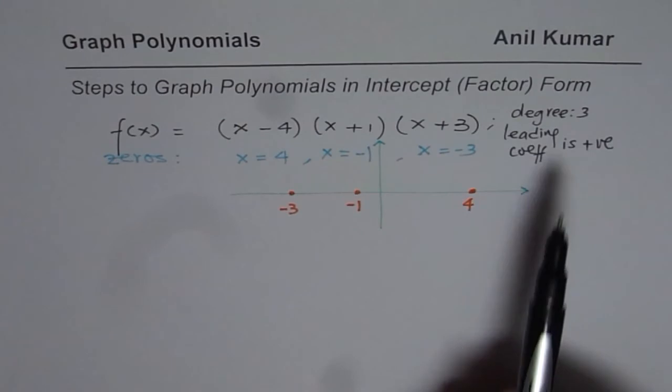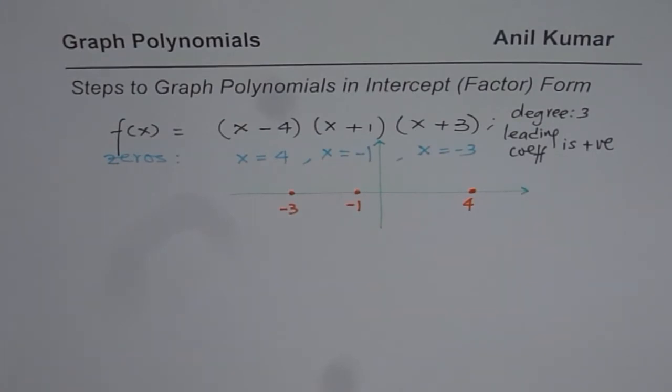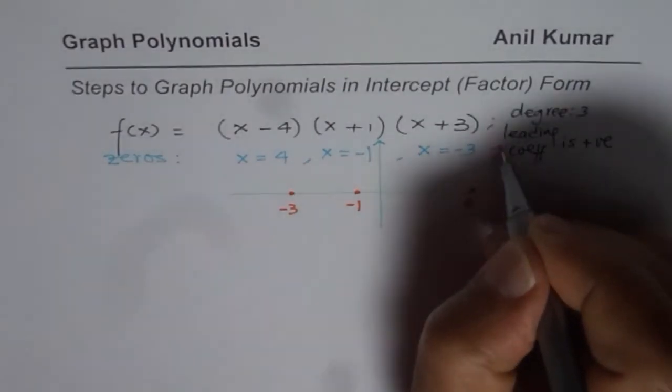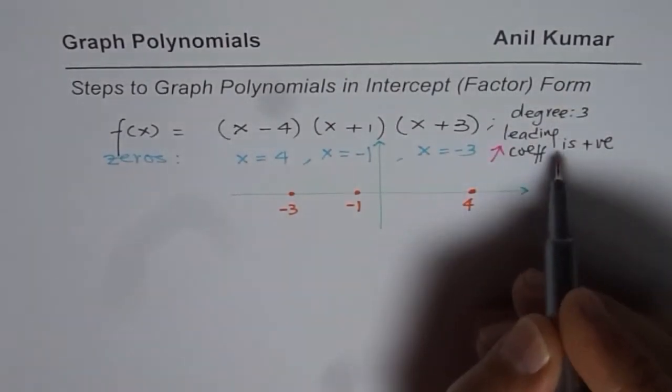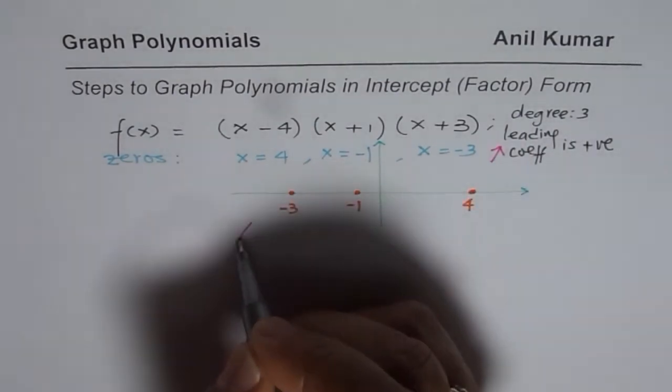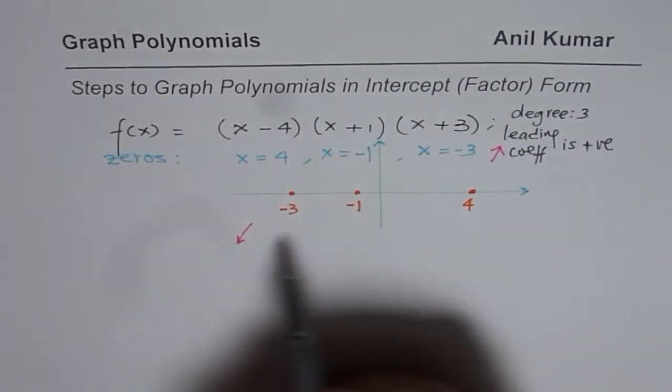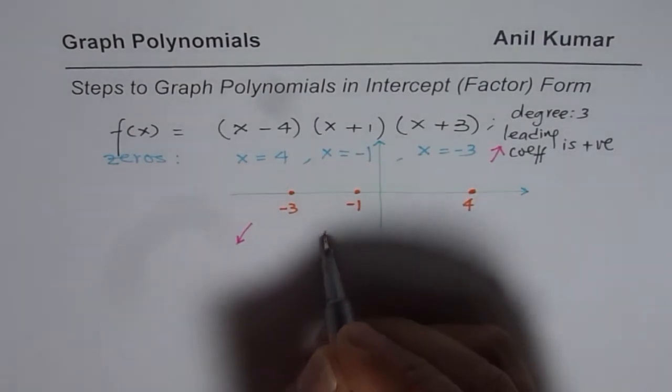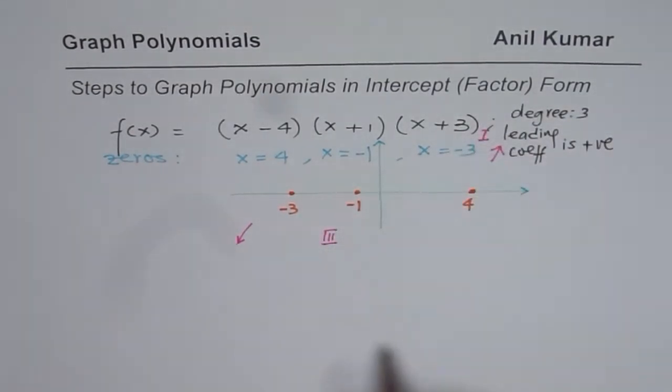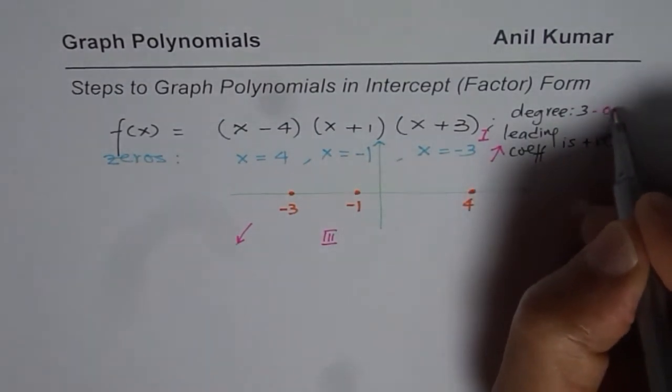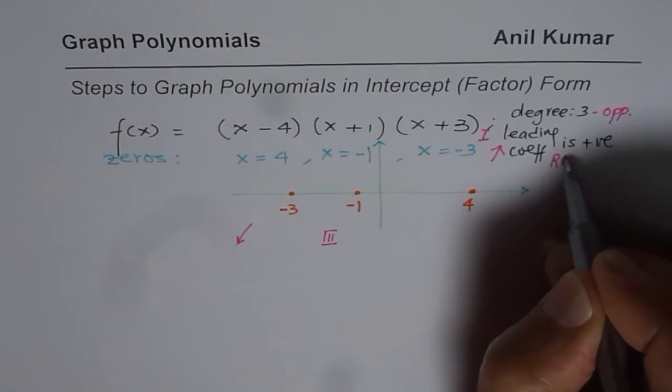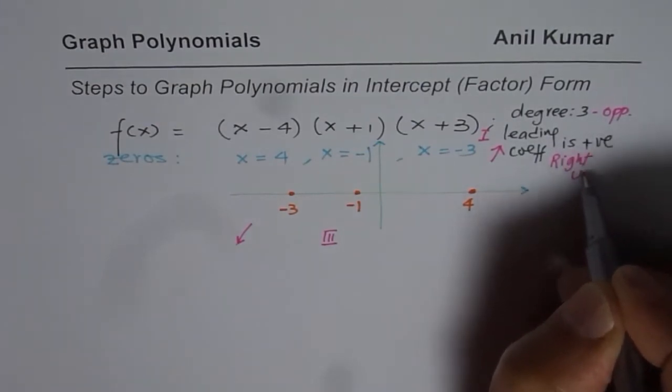Now when we say leading coefficient is positive, that means that the right side is up. So right side is up. So kind of going like this. And when we say degree 3, then it means opposite ends. So the characteristics will be, polynomial will move from quadrant 3 to quadrant 1. So degree 3 means opposite ends. And coefficient positive means right up.